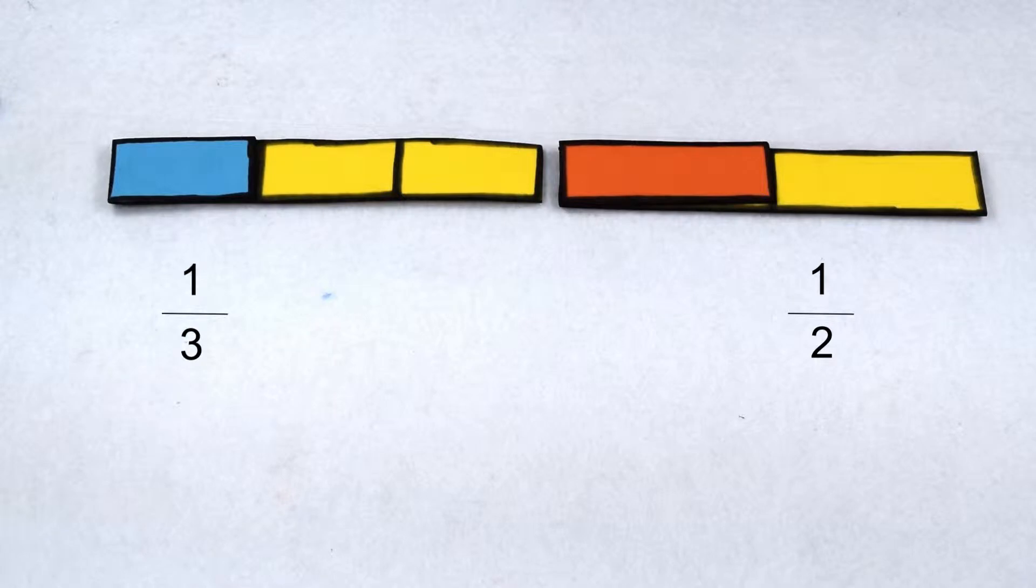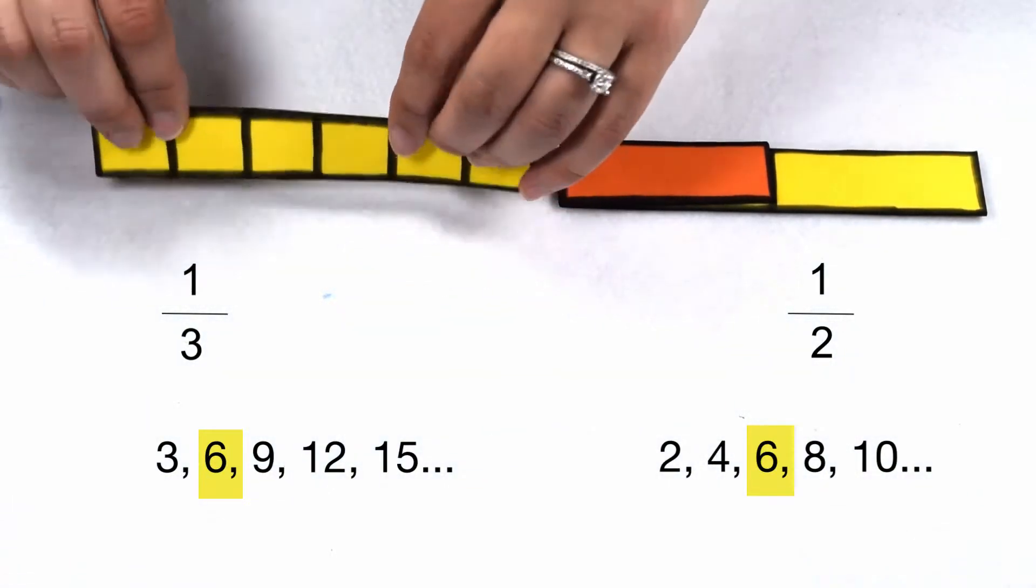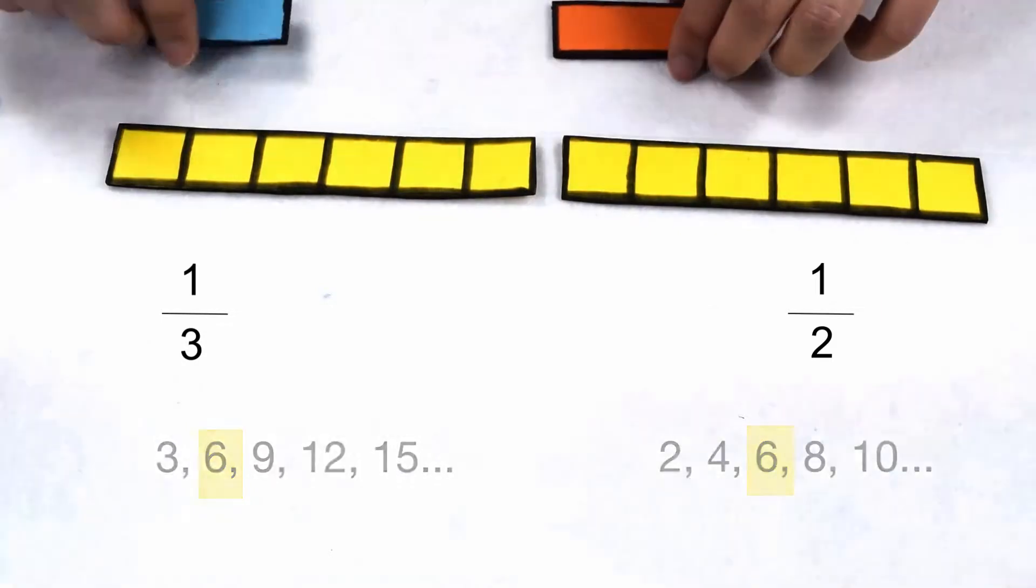Multiples of 3 include 3, 6, 9, 12, 15, and so on. Multiples of 2 include 2, 4, 6, 8, 10, and so on. 6 is the least common multiple of 3 and 2, so we can work to change both of our fractions to one that has a denominator of 6.